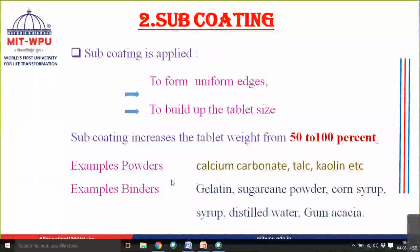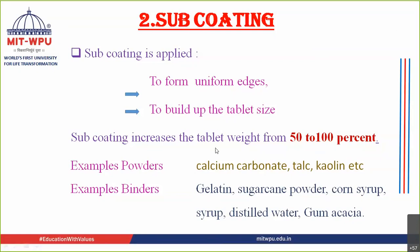The second step in sugar coating is sub coating. The purpose of sub coating is to produce uniform edges and to build up the tablet size. Two types of materials are used: powders such as calcium carbonate, talc, and kaolin; and binders which are gummy substances like gelatin, sucrose powder, corn syrup, simple syrup, distilled water, and gum acacia.